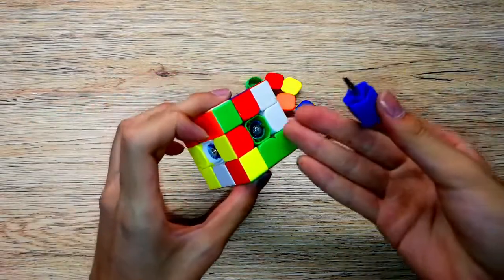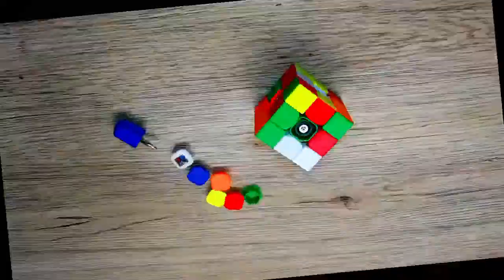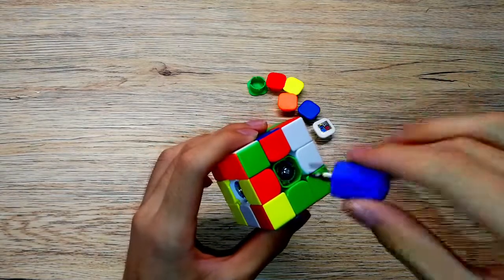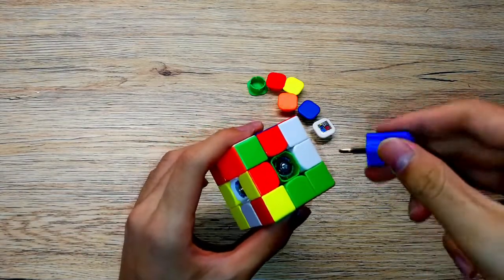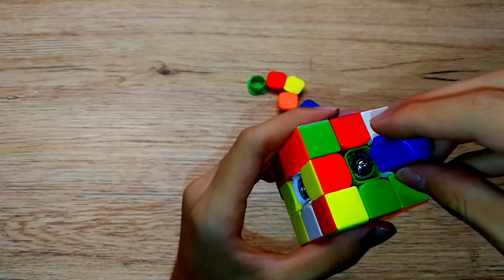I just realized I forgot which way to tension it, so I'm going to watch back my old video about how to set up your Rubik's cube. I figured it out - if you want to tighten it turn it to the right, if you want to loosen it turn it to the left.